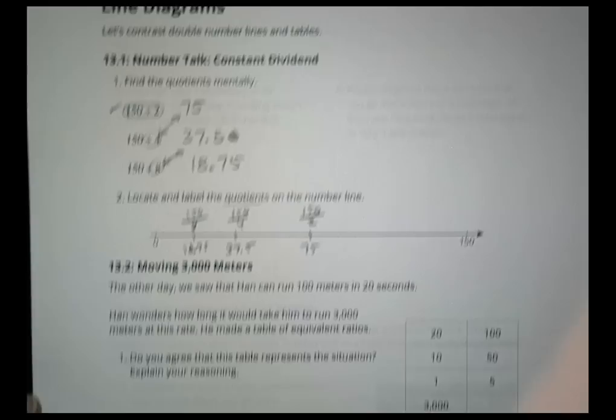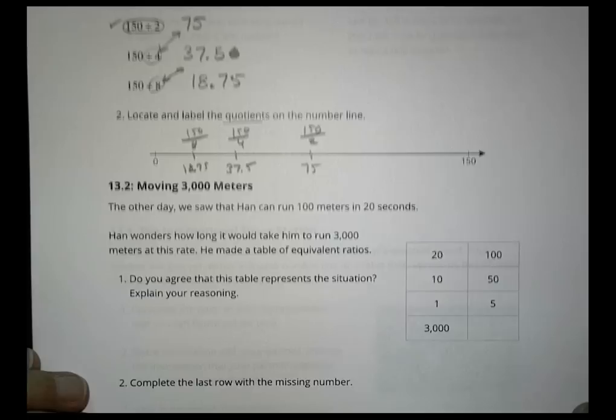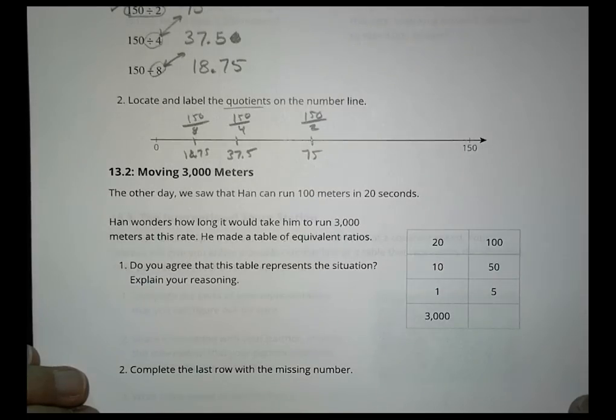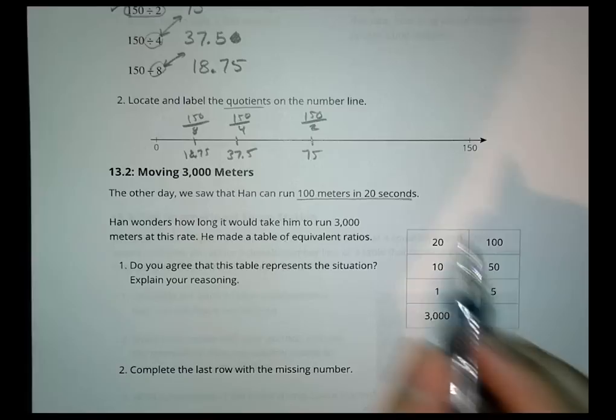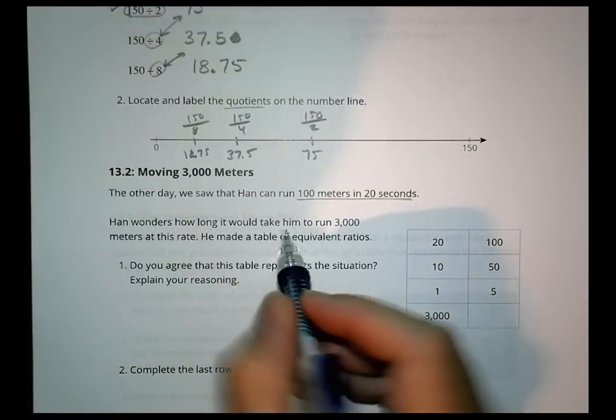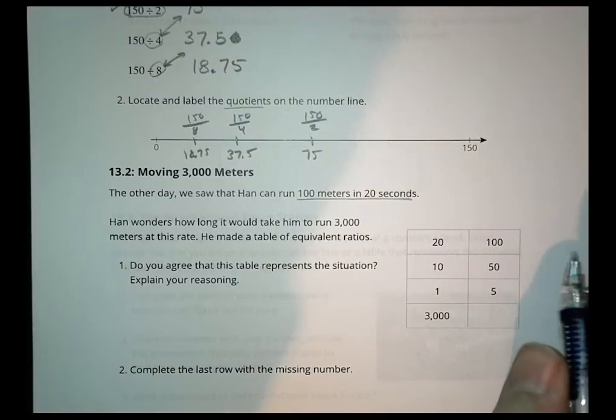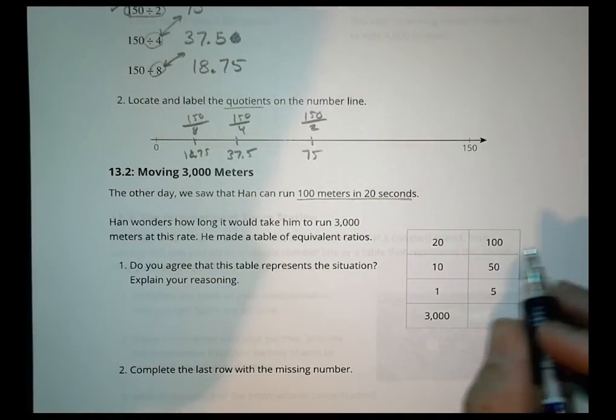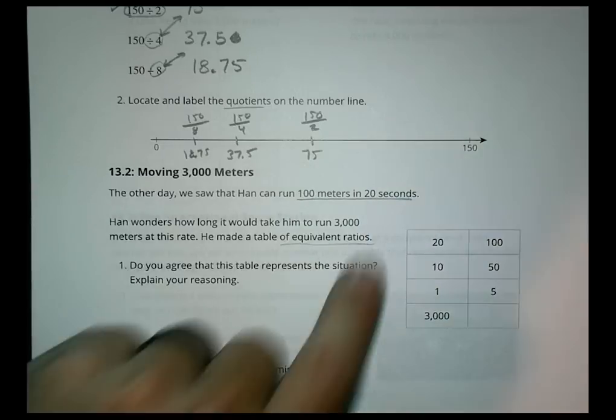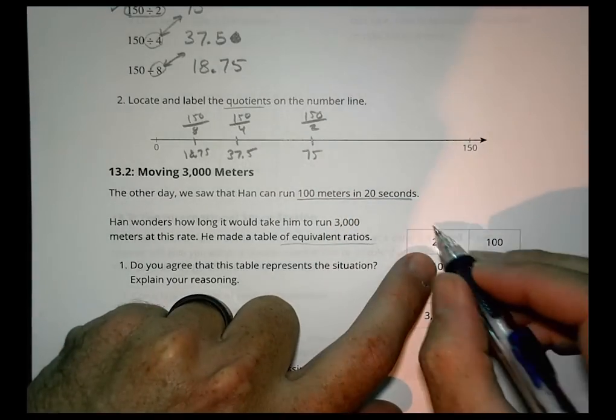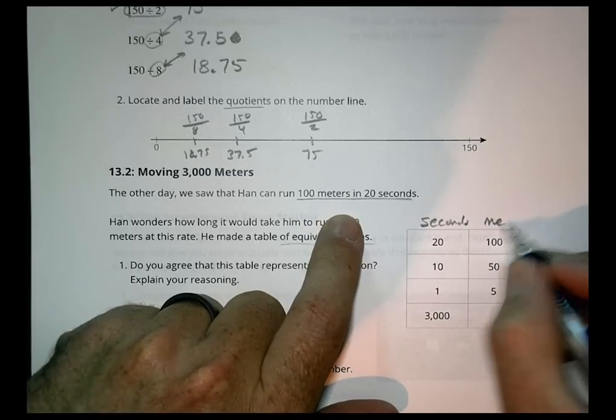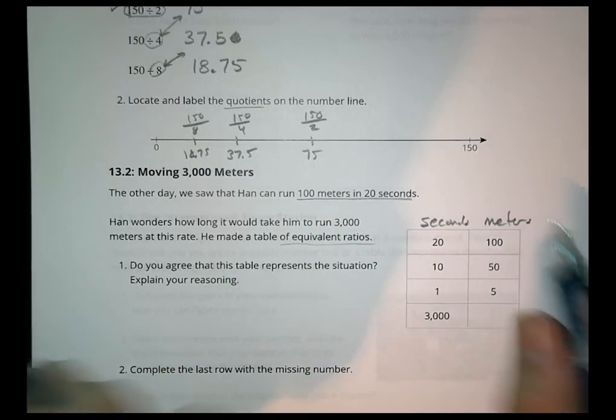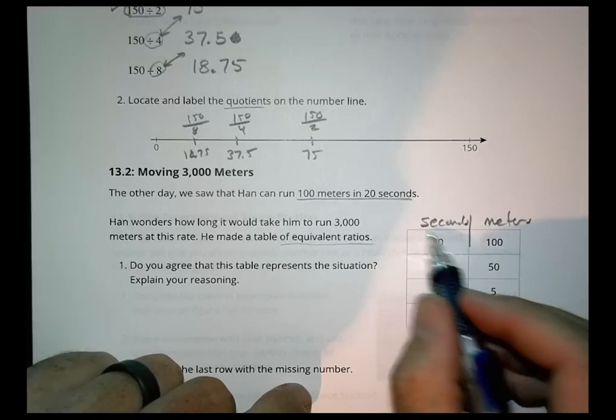Let's take a look at the activity for the day: Moving 3,000 Meters. It says the other day we saw that Han can run 100 meters in 20 seconds. Han wonders how long it would take him to run 3,000 meters at this rate. Do you agree with this table of equivalent ratios that he made?